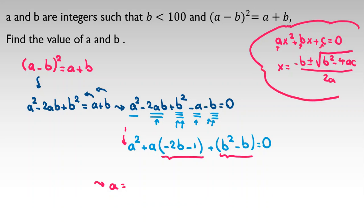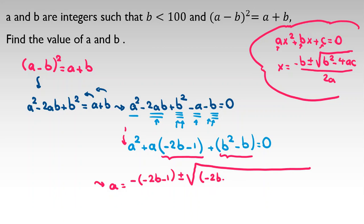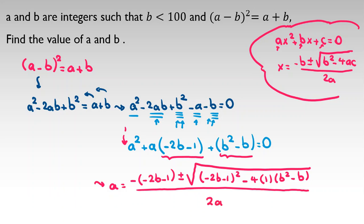I want to apply the quadratic formula here. Our function is in terms of A. The coefficient of A squared is 1, the coefficient of A is negative 2B minus 1, and the constant term C is B squared minus B. So applying the formula: A equals negative of negative 2B minus 1, plus or minus square root of negative 2B minus 1 squared minus 4 times 1 times B squared minus B, all over 2 times 1, which is 2.